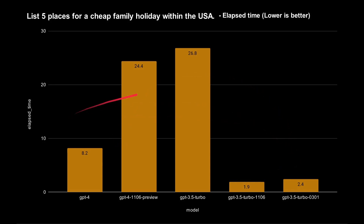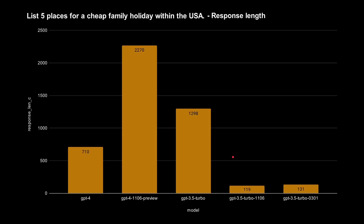So there's a huge difference in elapsed times. Why does it take GPT 3.5 nearly half a minute to reply, while the new Turbo takes just 2 seconds? It comes down to how much response it gives. Looking at the number of characters in the response, GPT 4 gave 710 characters, GPT 4 Turbo gave 2,270 characters, GPT 3.5 Turbo gave 1,300 characters, but the faster Turbo models only gave around 100–130 characters. Those only took a couple of seconds because they were outputting such short replies.